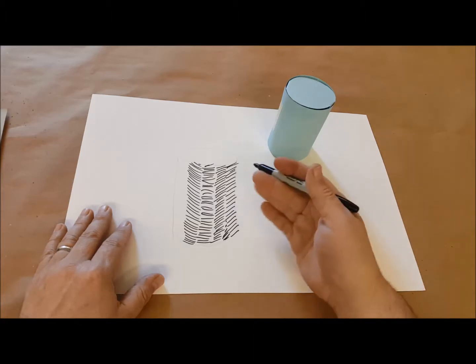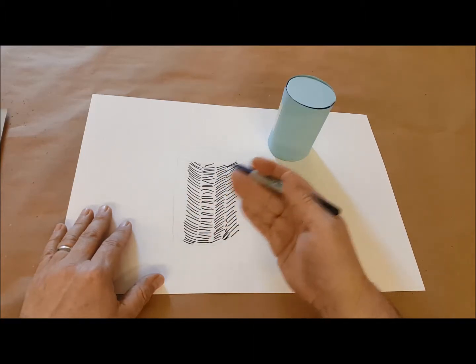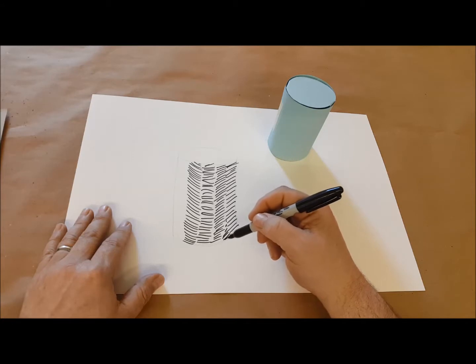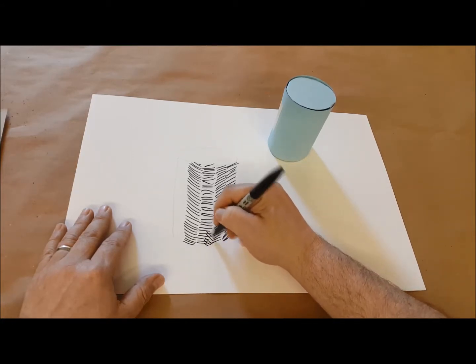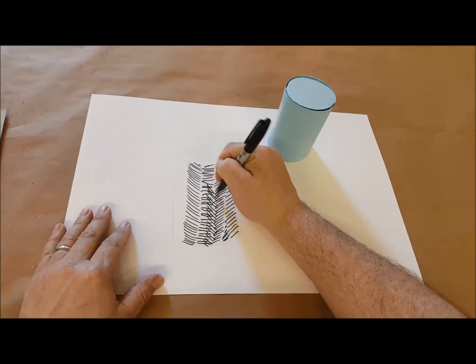Now, in order to show that one area is darker than another, I give it a second layer of hatching. This is where it becomes crosshatching. So I'm going to go ahead and make it darker here by crossing in a different direction.